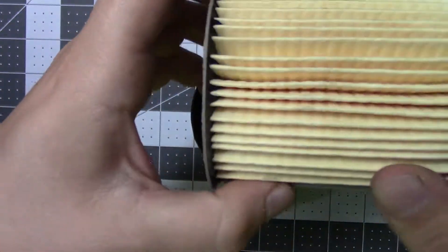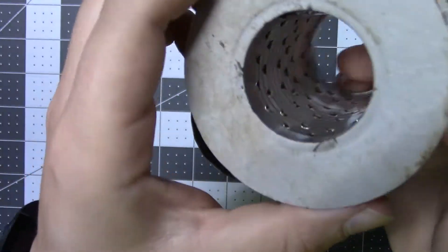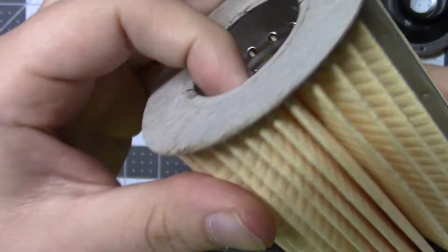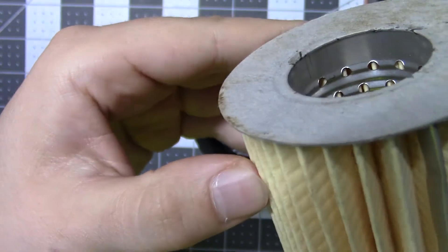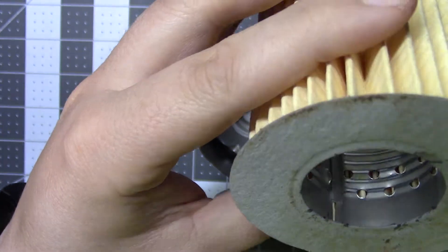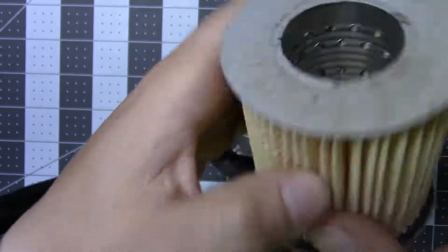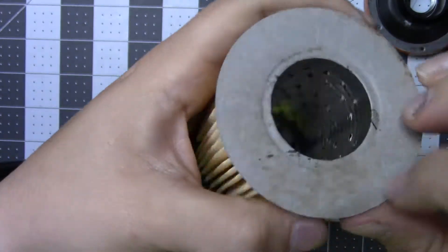Here you have the element. Metal ripple core in there, paper on the outside, cardboard.